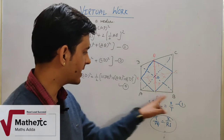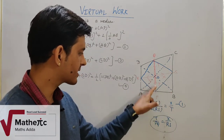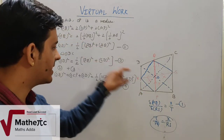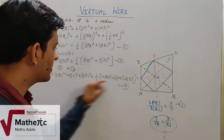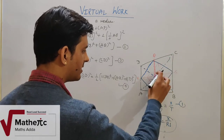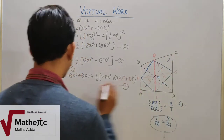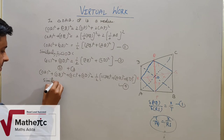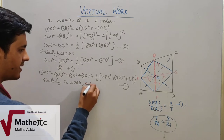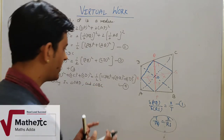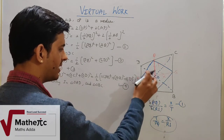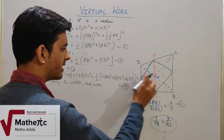We applied the median theorem in triangle OAB and then its opposite triangle ODC and added them. Now similarly there are two more triangles: triangle ODA and triangle OBC. We apply the median theorem in triangle OAD and triangle OBC — writing it out in detail.